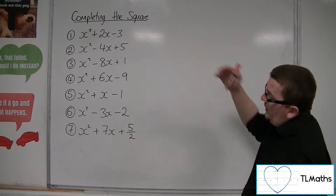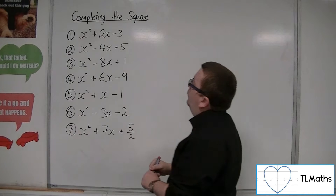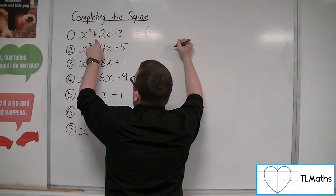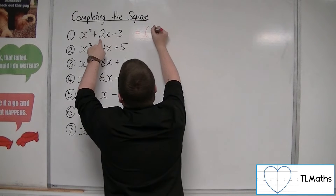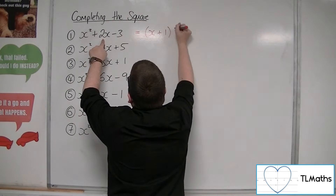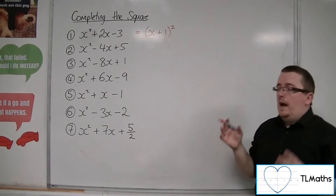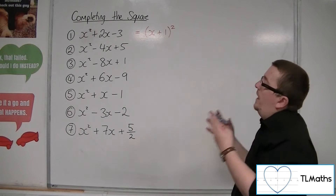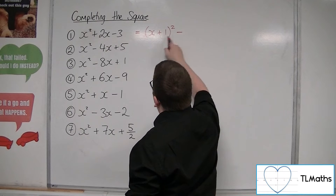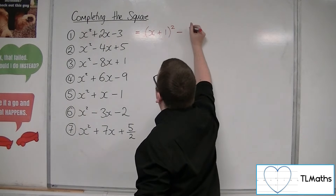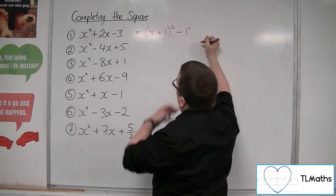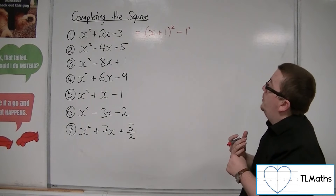Starting with x squared plus 2x minus 3, what we need to do is think about halving the coefficient of x here. So we've got x and then half of that number, which gives us plus 1, squared. But then that's too much, so we take away the square of that number — we always take away the square of that number — so 1 squared is just 1.